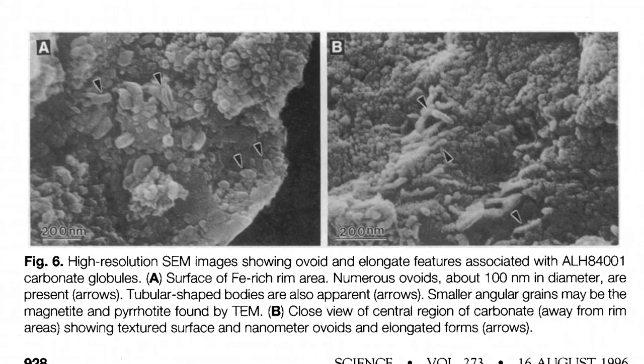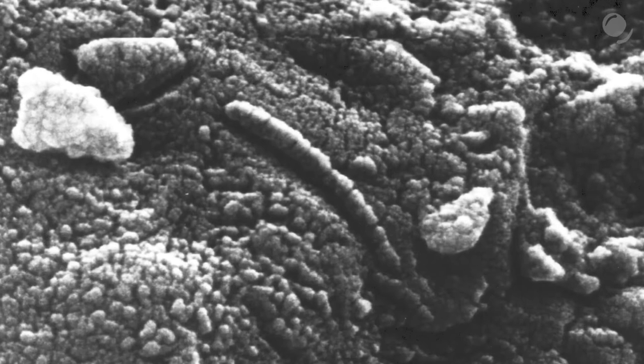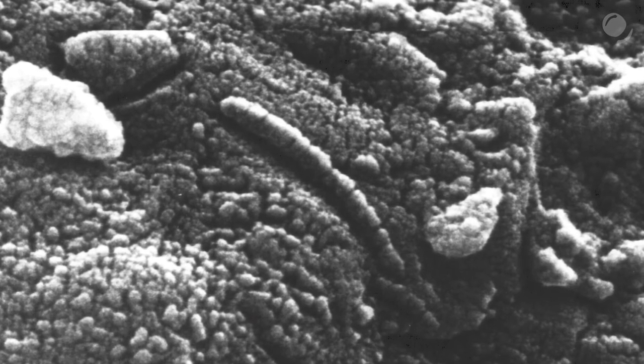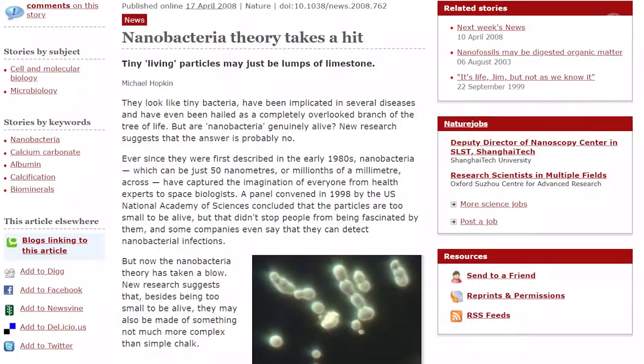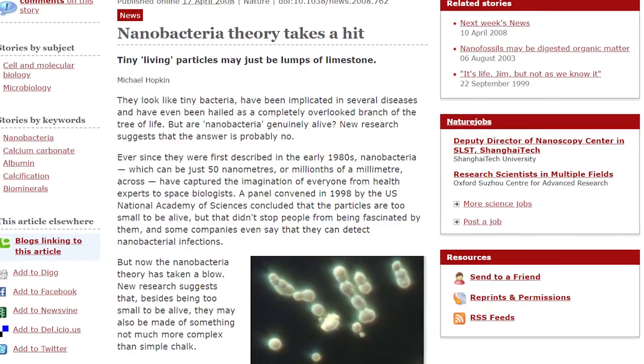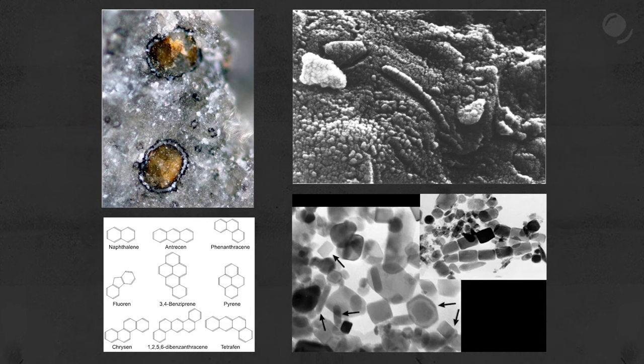And now the fourth point — those wormy structures that resemble Earthly microorganisms, also found inside carbonate globules. The researchers claimed these could be microfossils. Scientists conducted experiments to eliminate the chance that these are contaminants from Earth. The main point against the microfossil idea is size — they are orders of magnitude smaller than known microorganisms on Earth. In the article they are compared with the so-called nanobacteria, which is itself a controversial topic. Nowadays, what used to be called nanobacteria is no longer associated with life.